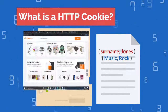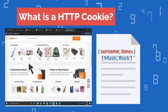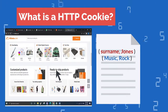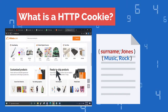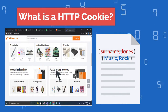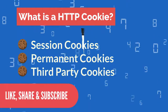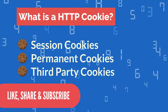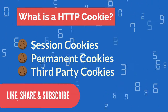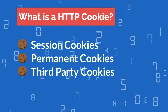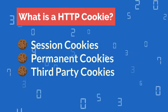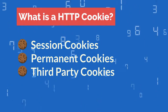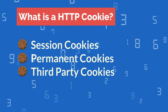Every time a user visits a website, the web server checks if it has set cookies on their browser before. There are three types of cookie: session cookie, persistent or permanent cookie, and third-party cookies.